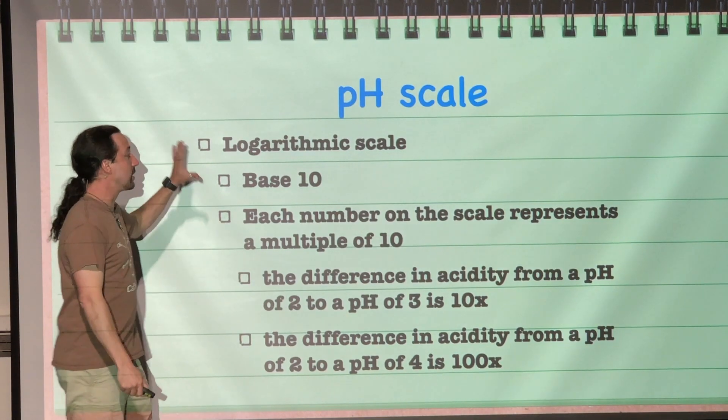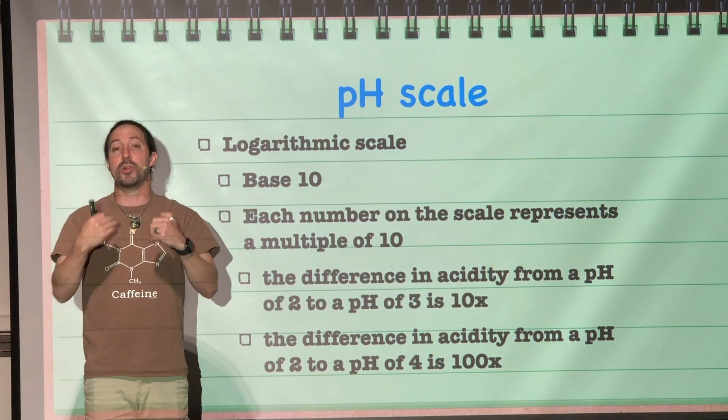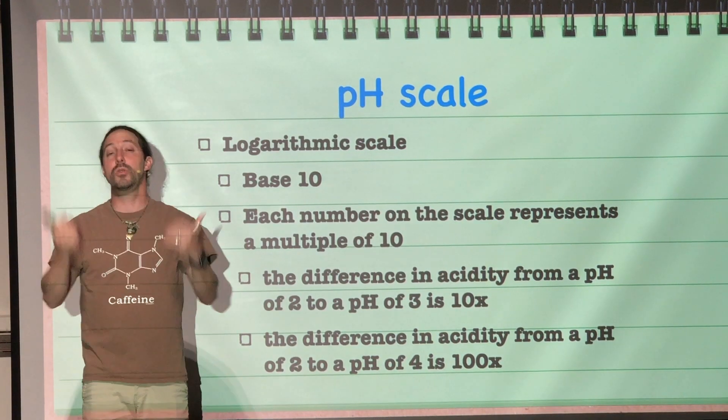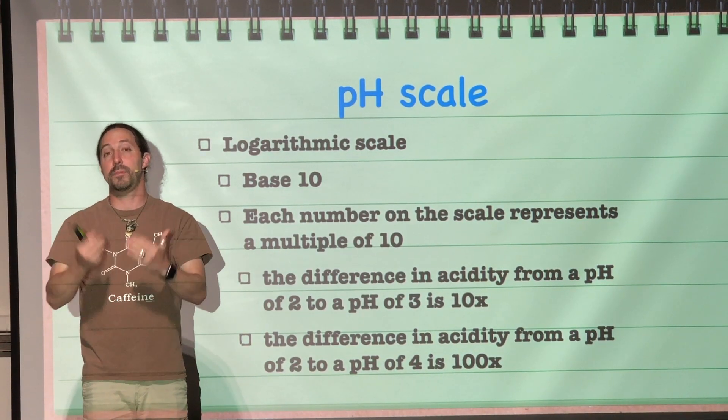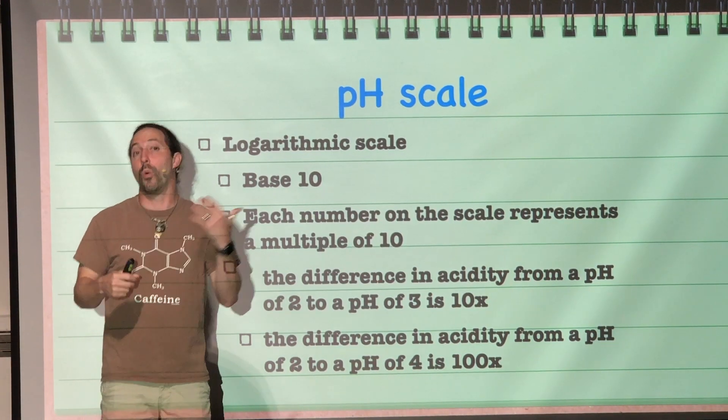So each step is a multiple of 10. That is how the scale works. And that means that when we are moving from a pH of 6 to a pH of 5 or 4 or 3, since each step is a multiple of 10, there's a huge difference in the pH of something, say, like 6 and a pH of 3 or 2.